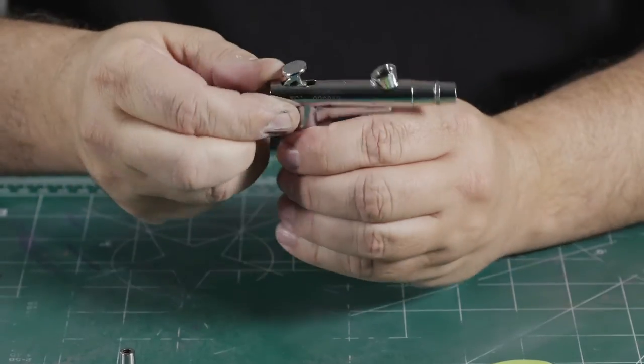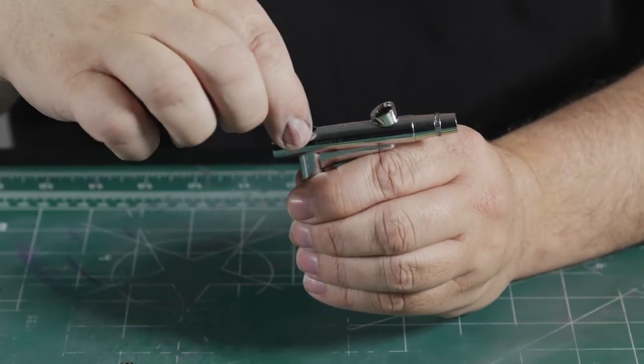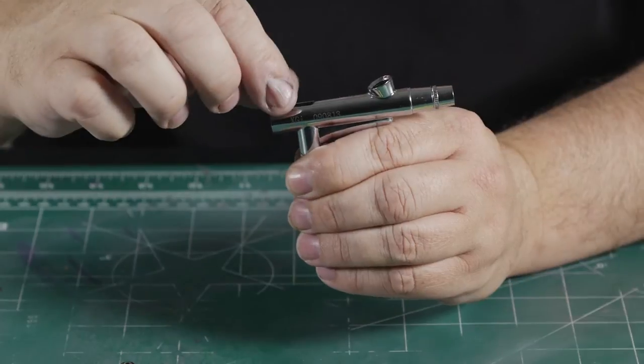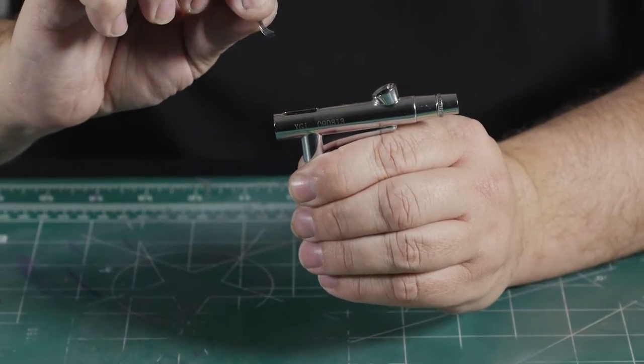Returning back to the airbrush body now we have the trigger. It simply lifts right out of the body. And we also have the actuator and it also slides out conveniently.